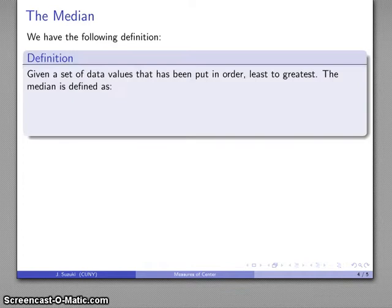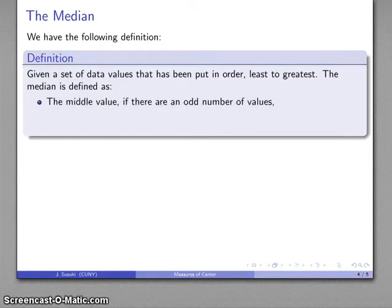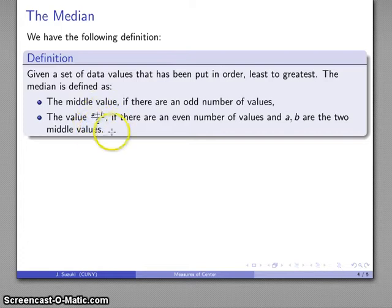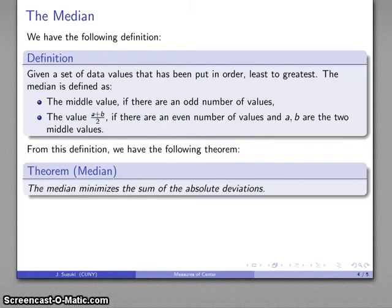It turns out this is going to be tied in with something called the median. We take our set of data values and put them in order — say, least to greatest. If there's an odd number of values, the median is the value right in the middle. If there's an even number, the median is the sum of the two middle values divided by two — the midpoint of the two middle values. From this definition, we get the result that the median minimizes the sum of the absolute deviations.